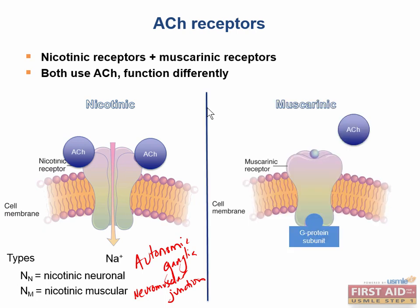Muscarinic receptors, on the other hand, are G protein-coupled receptors, and these act via a second messenger system. G proteins are multi-unit proteins that are bound to a receptor, such as a muscarinic receptor. In the picture here, we have a muscarinic receptor with a bound G protein subunit — a very simplified version.